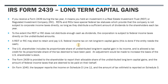The 2439 arises because a REIT or RIC can elect to retain its long-term gains within the company rather than distribute the income to shareholders. This is often done when the entity needs the cash. For example, they're selling assets and have cash proceeds from those sales, but they don't want to or can't distribute the cash to shareholders because they need it.